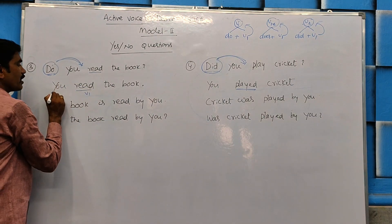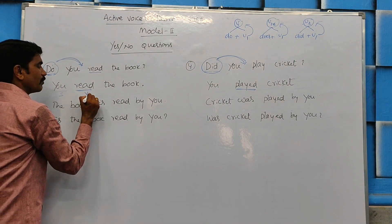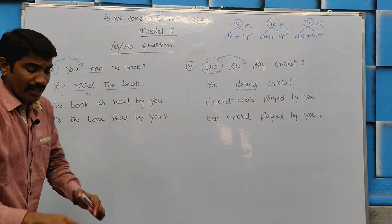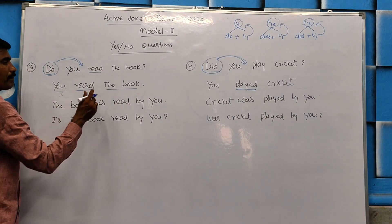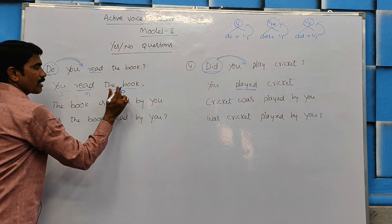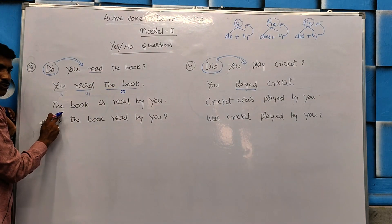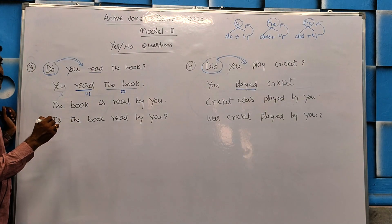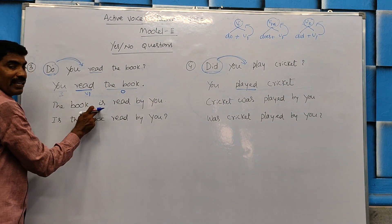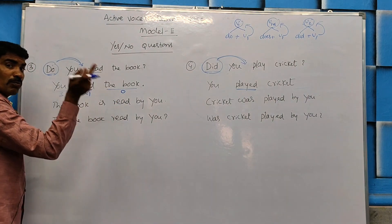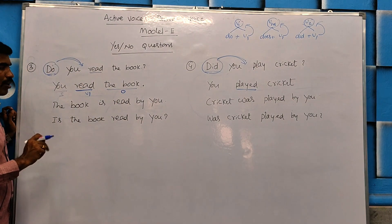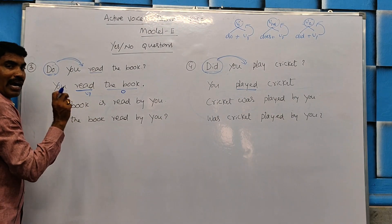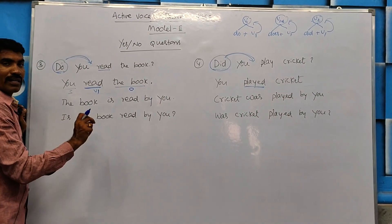This is Subject Form, this is Verb 1, this is Object. In the Passive, we have Subject. We have V1, we have Passive — Am, Is, or Are — plus V3. We have Subject. With the V1, we can express the Passive: Am, Is, and Are.